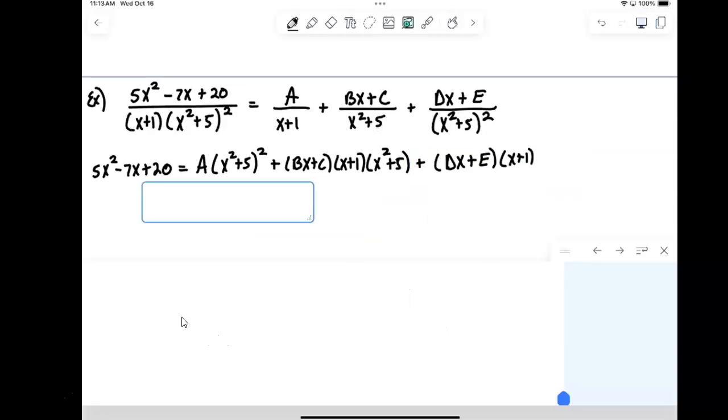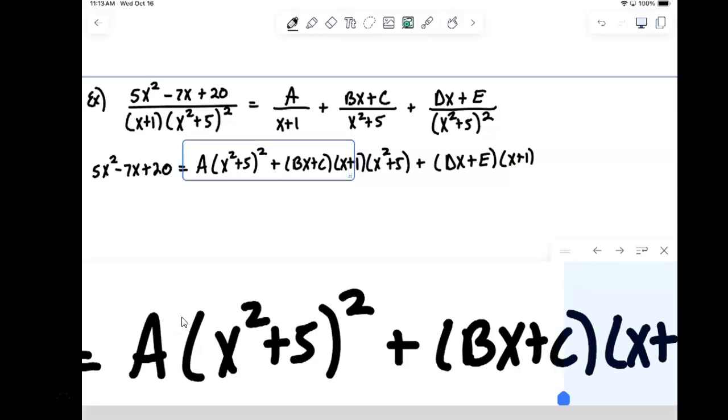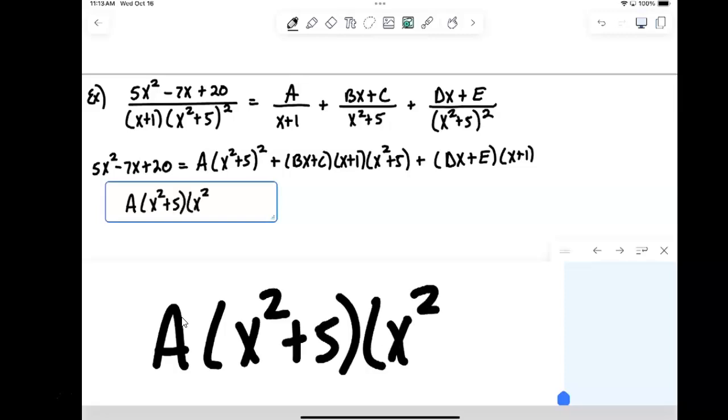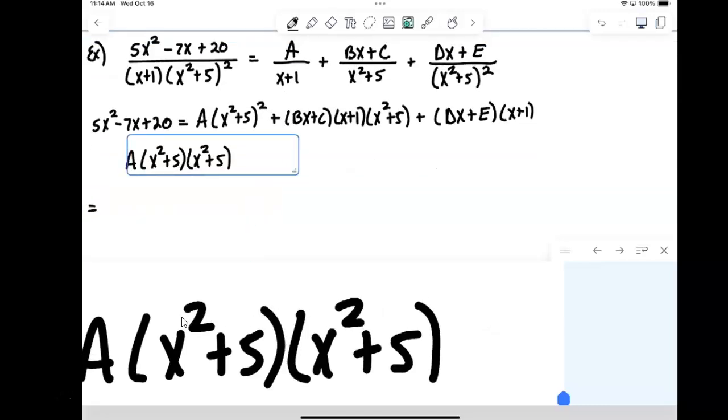Okay, so that's the first step, just multiplying through. And now I want to go through and start simplifying, start multiplying some stuff out. So I'm going to do a couple intermediate steps here, first of all, to kind of help me out. So remember when you square something, that's multiplying times itself. So that will be a times x squared plus 5 times x squared plus 5.